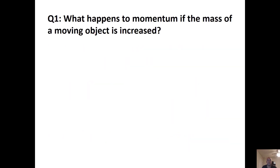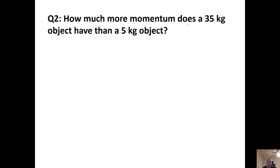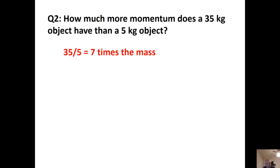What happens if the mass of a moving object is increased? Using p = mv, if mass goes up, momentum goes up. How much more momentum does a 35 kg object have than a 5 kg object? Set up a ratio: 35 divided by 5 equals 7. So the new momentum is 7 times whatever the momentum was before.